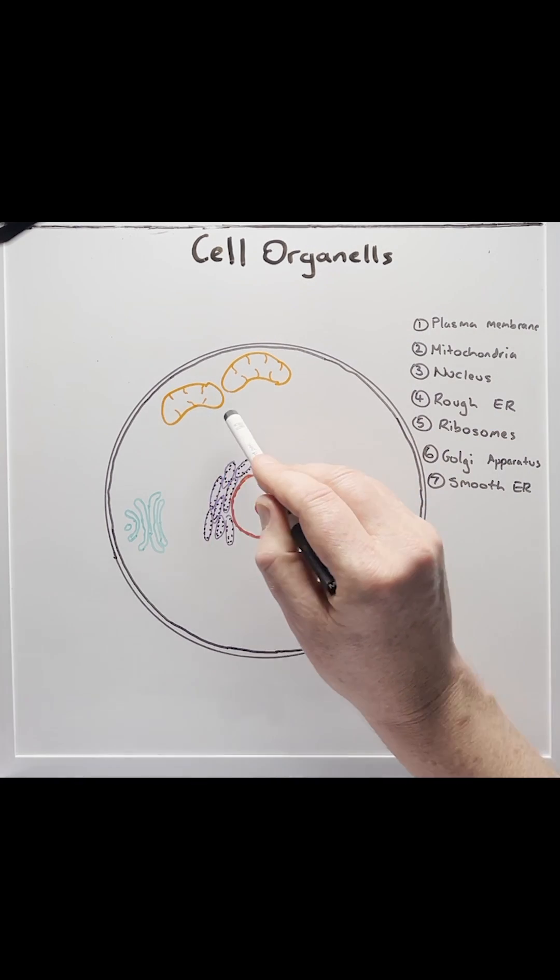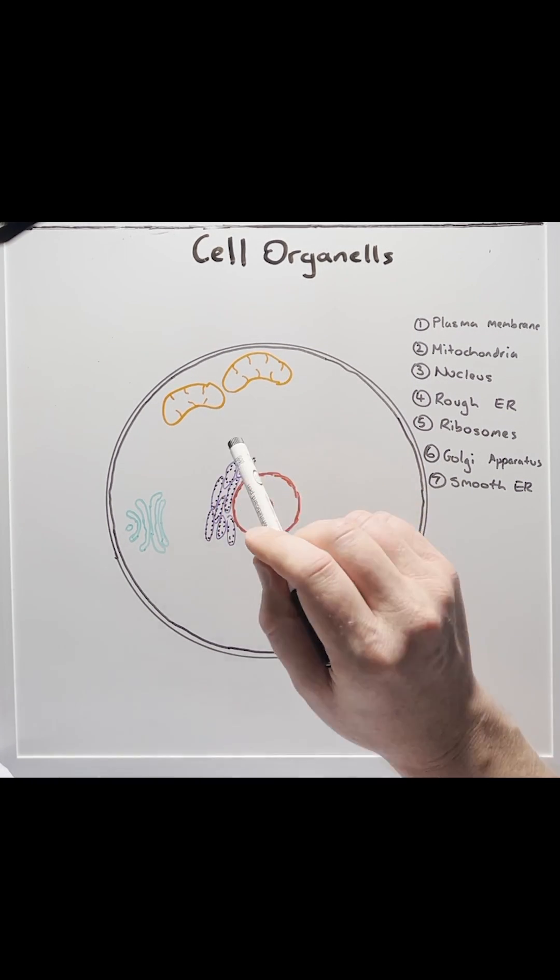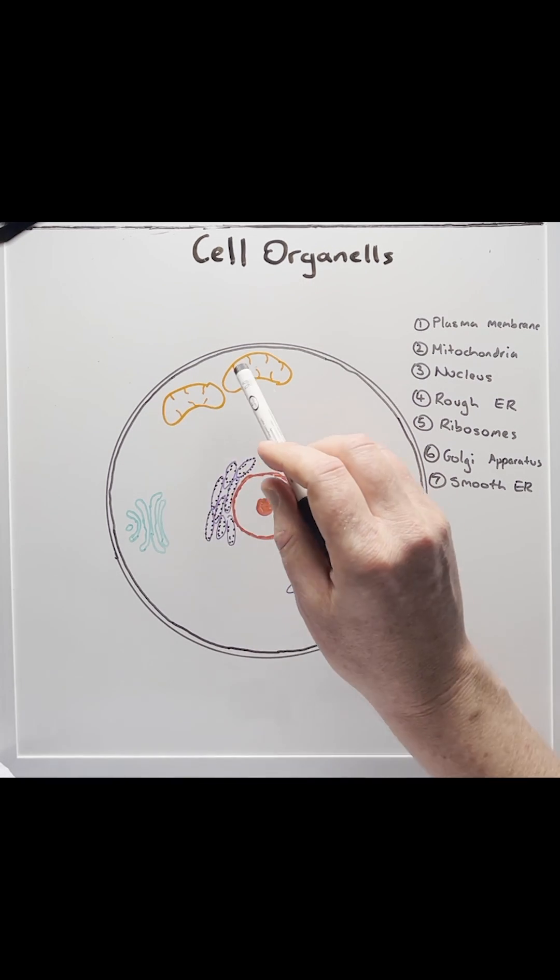Number two, the mitochondria. This is the powerhouse of the cell. It's here where the energy for the cell is made in the form of ATP.